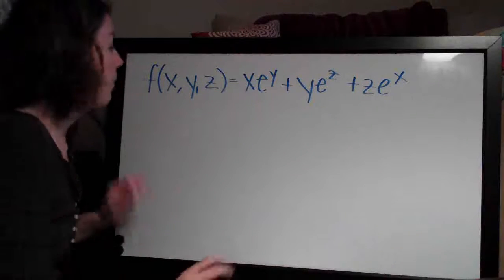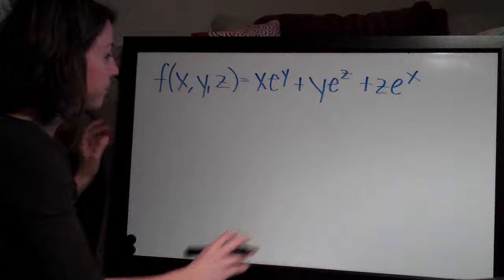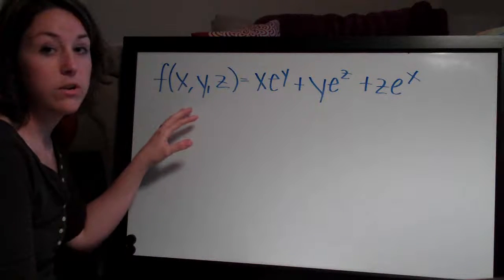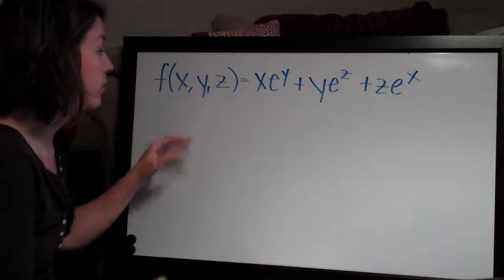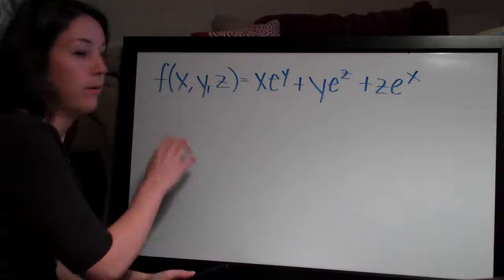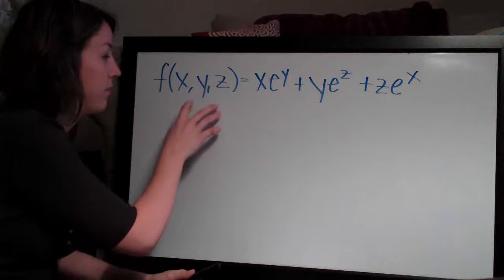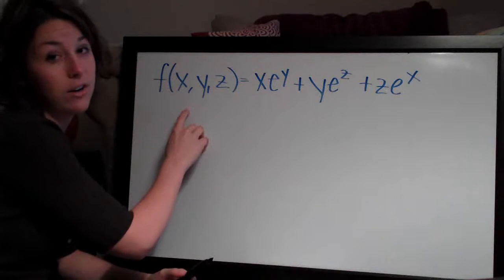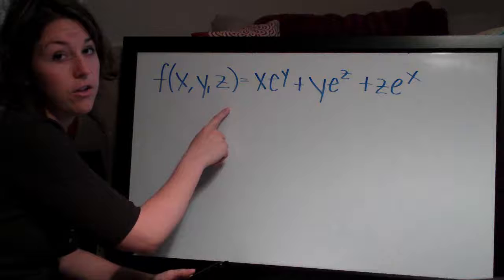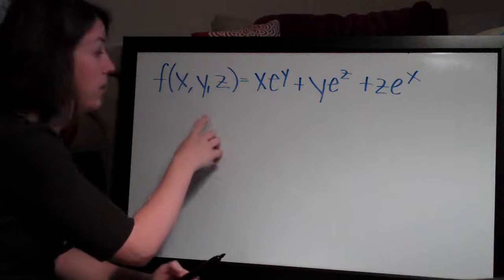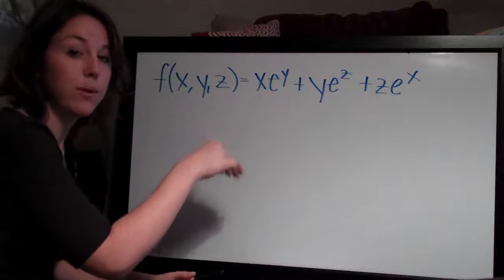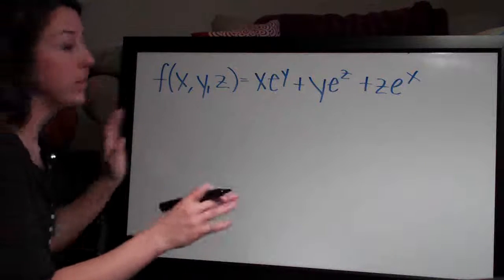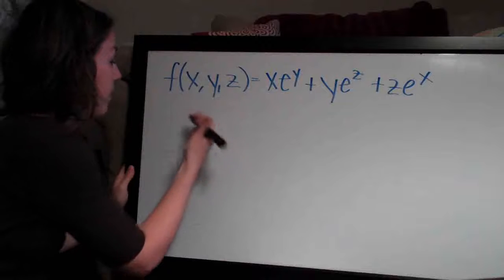As always with partial derivative problems, we need to realize that our answer is going to include the number of equations of the variables that we have in our problem. We have three variables in our equation — x, y, and z — so our answer is going to have three parts: the partial derivative with respect to x, then with respect to y, and then with respect to z. So we have three things we need to do, and we'll do it one at a time.